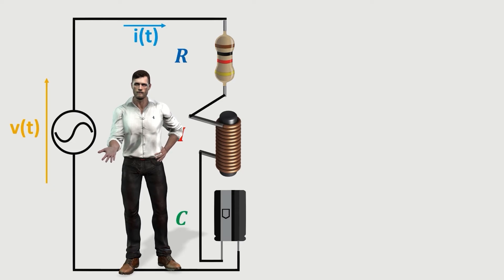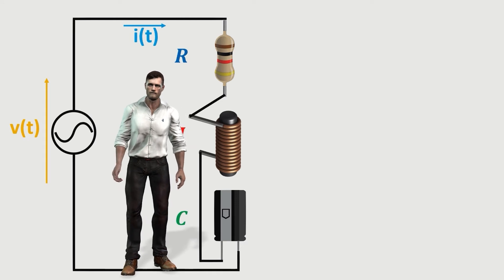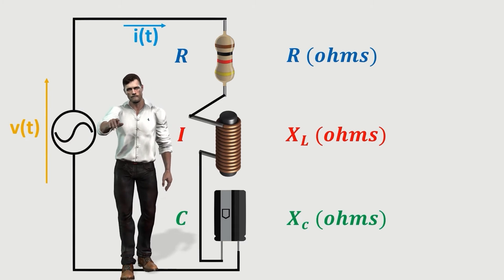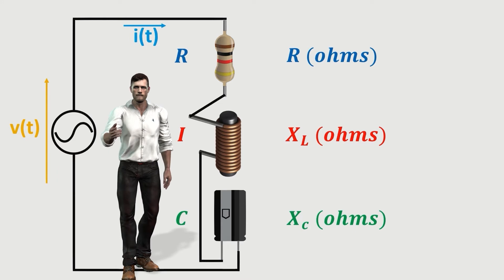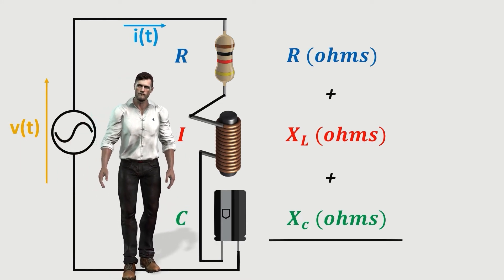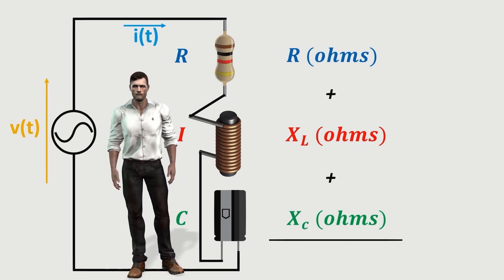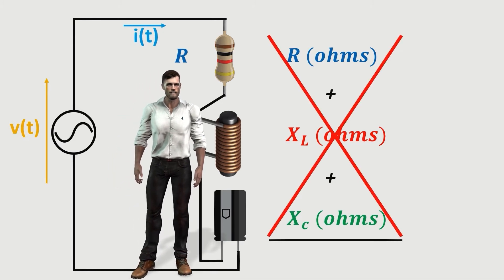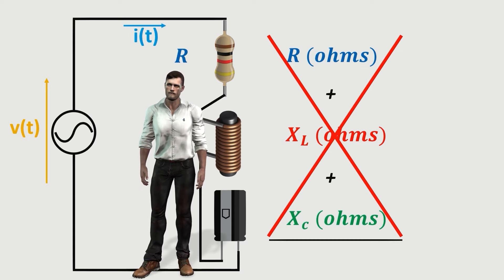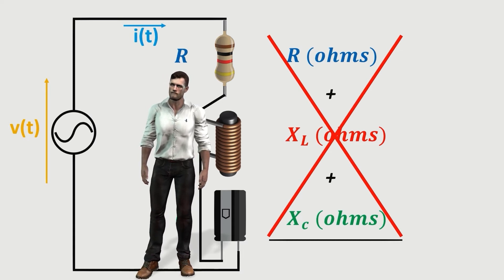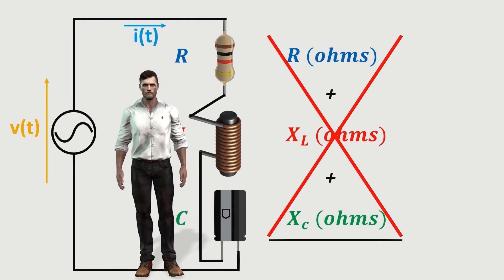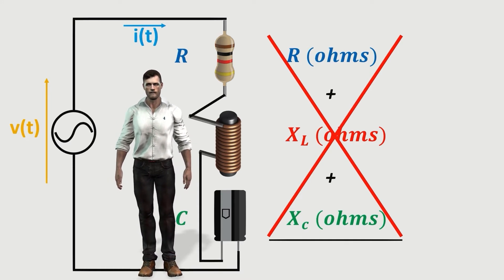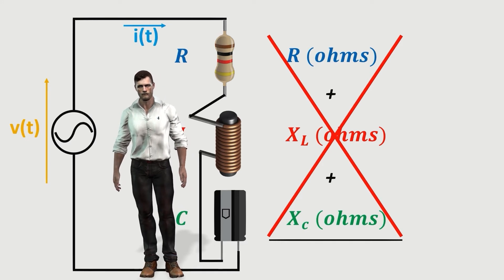Now that we know the behavior of these three passive components individually, it is time to combine them in series in an AC circuit. The opposition that these elements exert to the flow of current depends on the resistance, the inductive reactance and the capacitive reactance — all expressed in ohms. We might be tempted to add these three values arithmetically as we would for resistors in series, but this is not valid since the voltages in each element are not in phase with each other. The voltages must be added taking into account the phase shift, using complex numbers or a graphical method based on the sum of phasors.